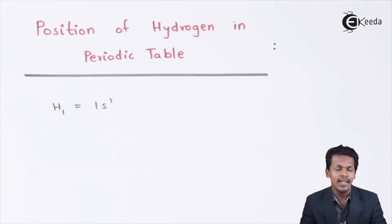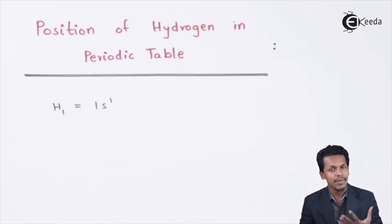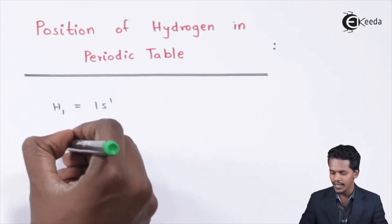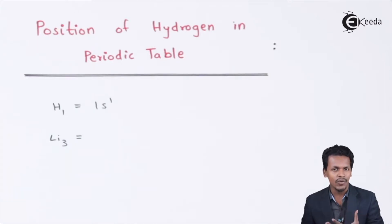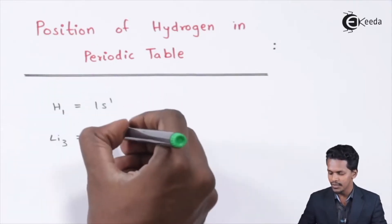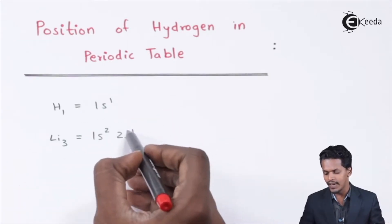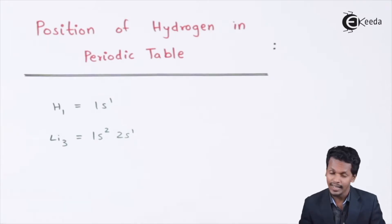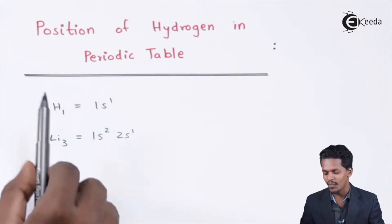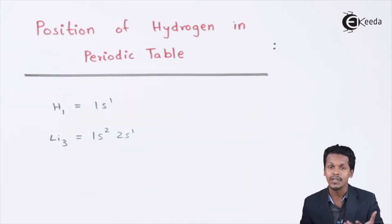S-block elements are metallic in nature and can easily donate electrons to achieve a complete octet. Comparing hydrogen with lithium — lithium has atomic number 3 with configuration 1s2 2s1 — both have a similar general electronic configuration. But lithium is metallic in nature, while hydrogen is gaseous. Dihydrogen exists in gaseous form, so hydrogen differs from typical s-block metals.